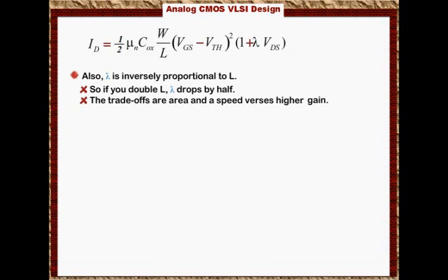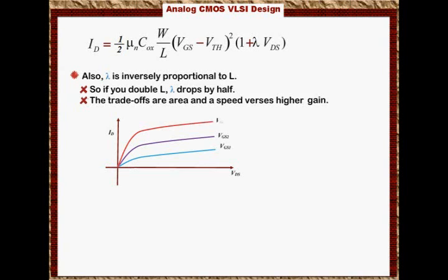If you plot VDS versus ID for a particular VGS, you start with the linear region and then until you hit saturation. But by increasing VDS, the current increases, because now you have 1 plus lambda times VDS. So if you increase VGS, the current will increase linearly in the saturation region, but at a different slope. We will assume that alpha VDS over alpha ID is constant, but that is not always the case. So basically, we will assume that lambda is independent of VGS. In reality, it does change as a function of VGS.